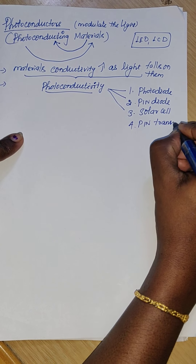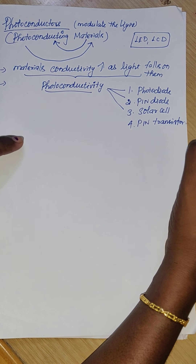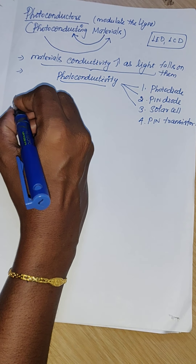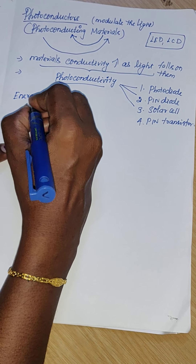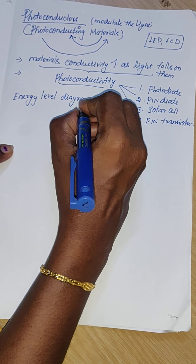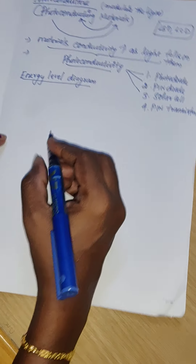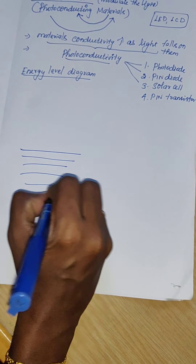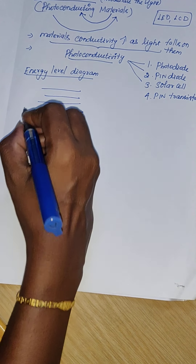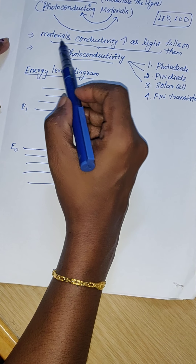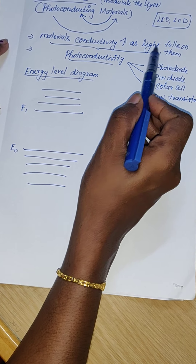We will explain the photo conductivity phenomena by means of an energy level diagram. The lower energy level is the valence band and the higher energy level is the conduction band. Let me mark the valence band as E0 and the conduction band as E1.